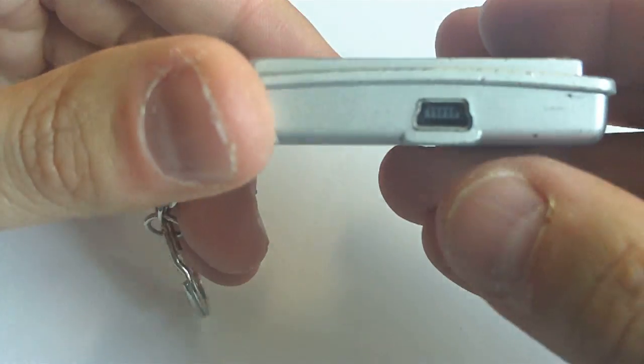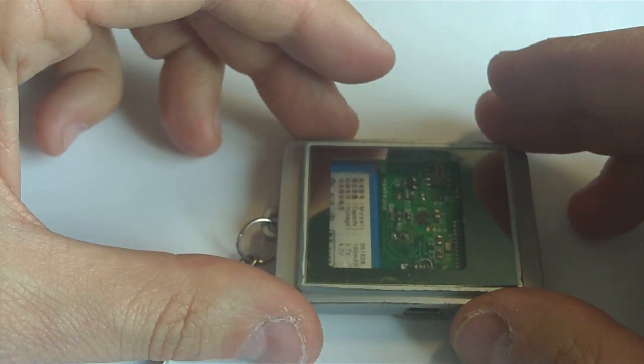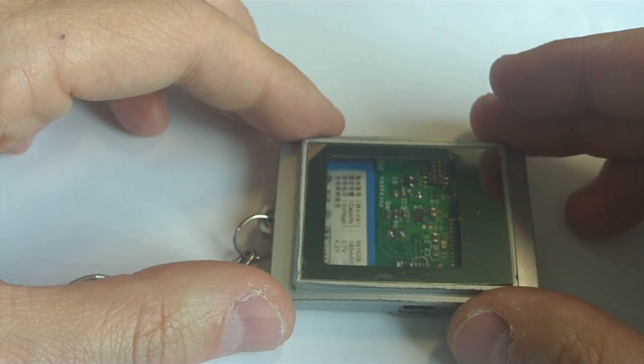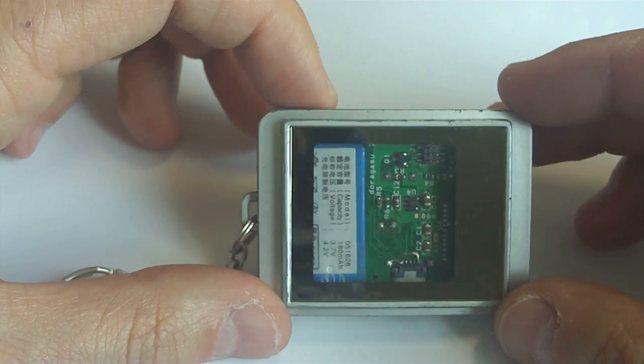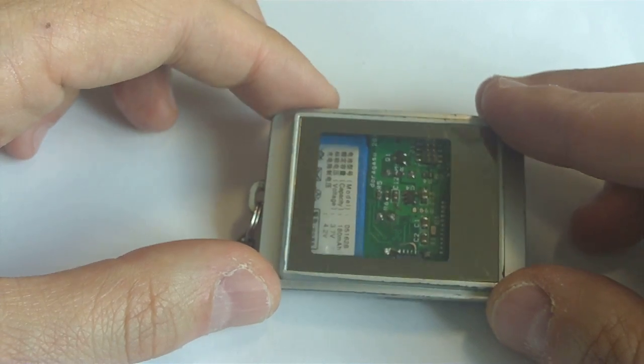It also has a USB port for battery charging. This way, if I want to find the keys, I can talk to the Bluetooth interface and activate the buzzer in the keychain. Then I have only to follow the acoustic beeps to find the keys.